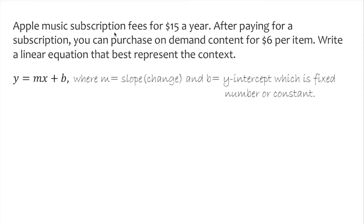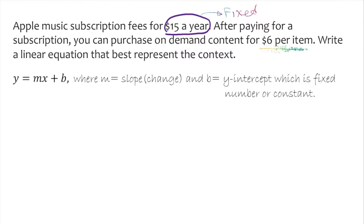If we read this problem, it's $15 a year — that's fixed. And then we're looking at $6 per item. We don't know how many items, so that's the unknown, which is basically x — it's changeable.